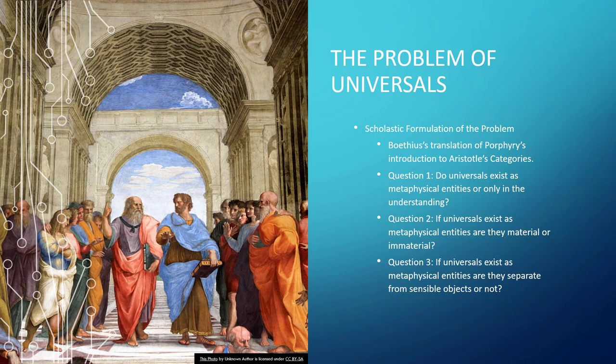So the scholastics approached the problem of universals in the following way. They were influenced by Boethius' translation of Porphyry's introduction to Aristotle's Categories, and they focused on three questions. Question one: do universals exist as metaphysical entities or do they exist only in the understanding — are they real things out in the world or purely mental entities? Question two: if universals exist as metaphysical entities, are they material or immaterial? Question three: if universals exist as metaphysical entities, are they separate from the sensible objects or not?